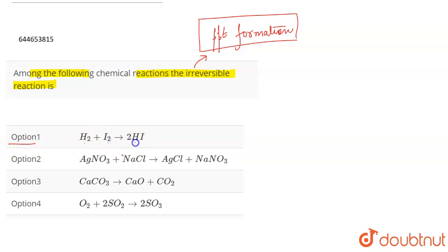The reactants and products are all in the gaseous state in this case, so we can reverse this reaction under certain conditions. This is a reversible reaction. Talking about option two: AgNO₃ and NaCl